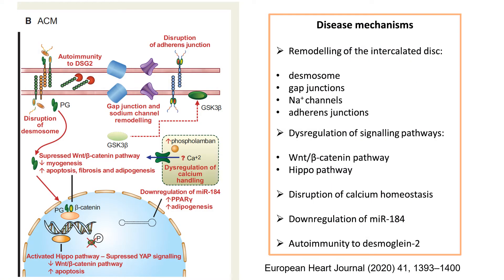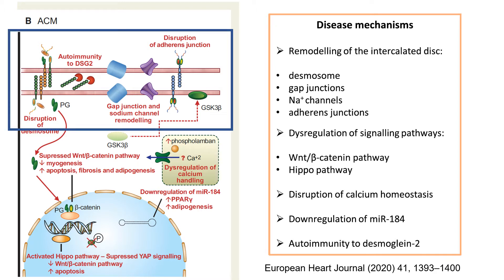This figure summarizes the disease mechanisms known in arrhythmogenic cardiomyopathy. The most frequent encountered mechanism is remodeling of intercalated discs. These include mutations in desmosomal region and also gap junction, sodium channels, and adherent junction. In addition to intercalated disc remodeling, we have also some dysregulation of calcium handling, which leads to decreased myogenesis and increased apoptosis, fibrosis, and adipogenesis.